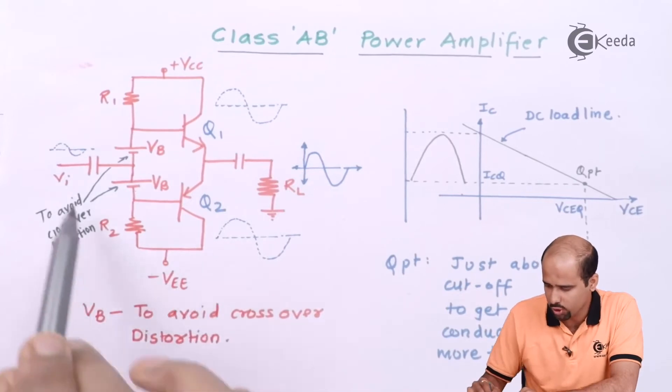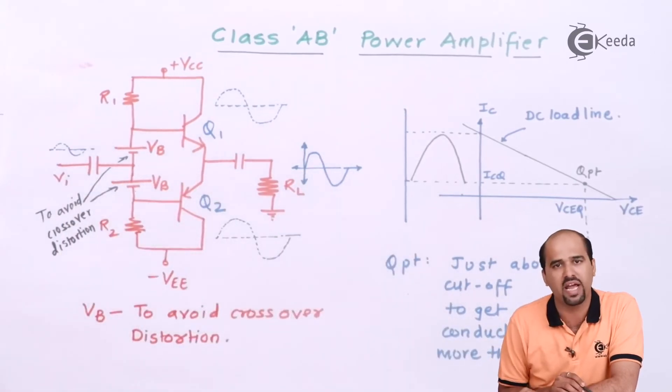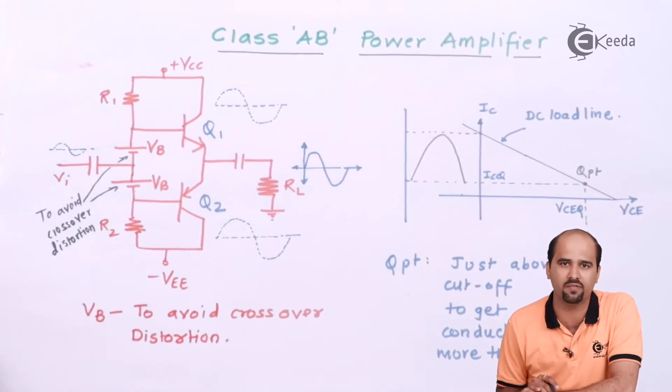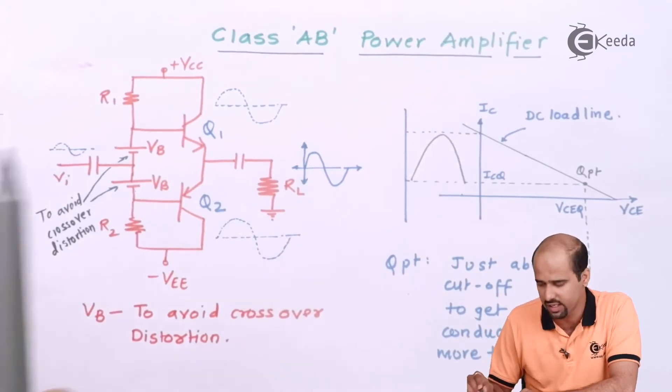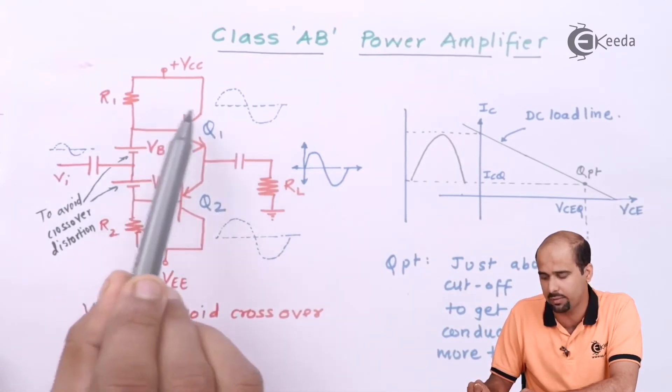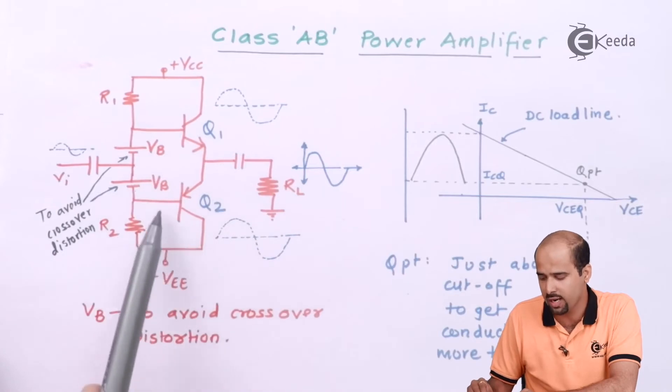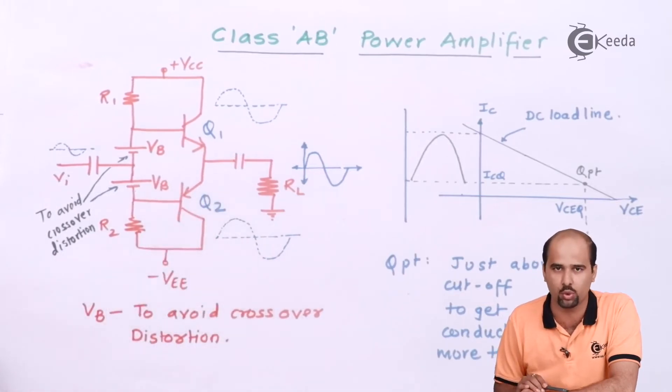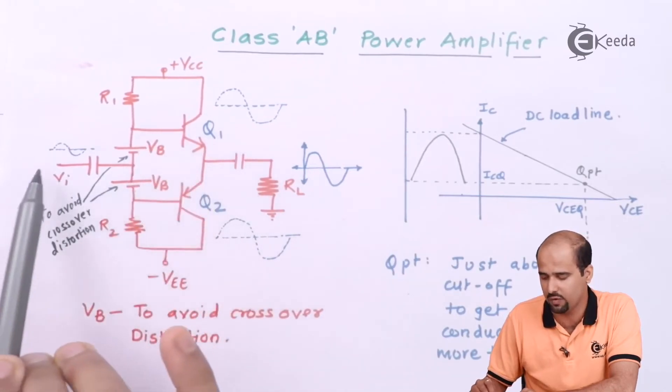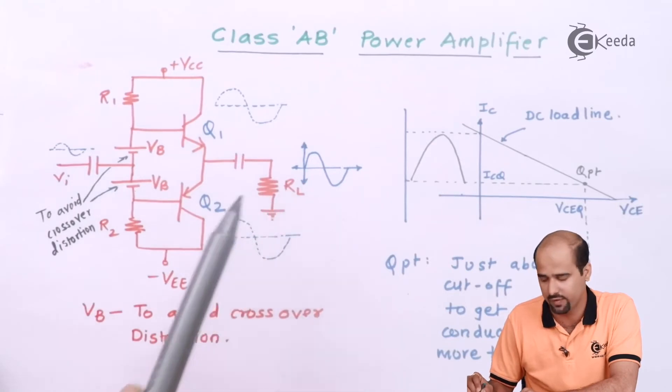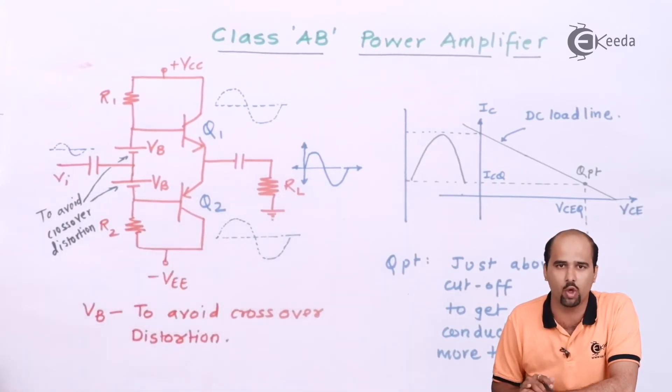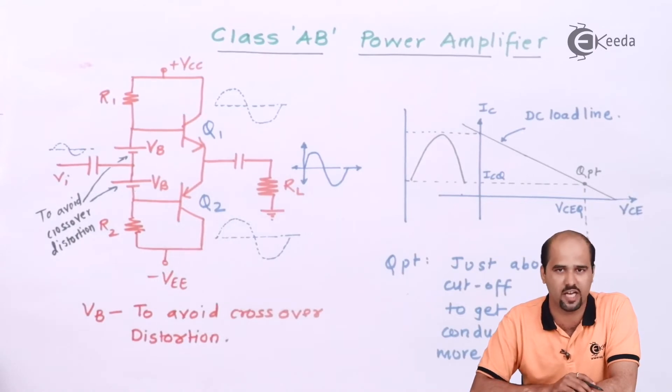Let's study about this particular circuit diagram, especially called as the class AB power amplifier with complementary symmetry. Complementary symmetry class B power amplifier we have studied and that is nothing but related with NPN transistor as Q1 and PNP transistor as Q2. When Q1 is working, it will form the emitter follower. When Q2 is working, it is also forming the emitter follower but in different half cycle.